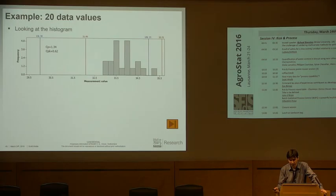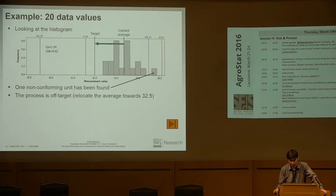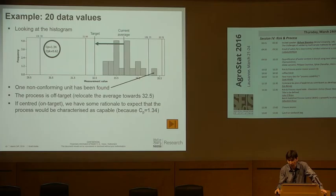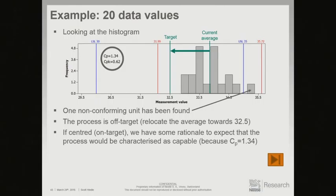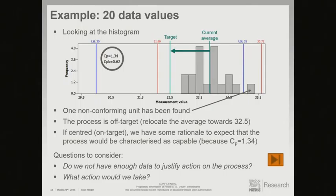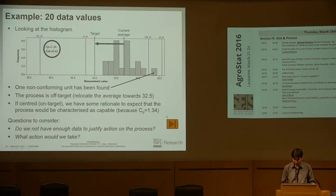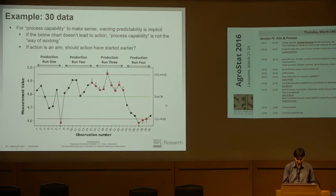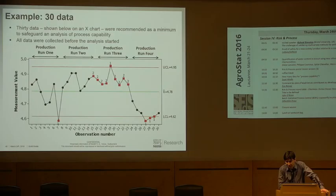Example two. We have four days, five values per day. The various specifications are shown on the picture, so the uncertainty is pretty high. Here we have the comparable picture — consistent with a predictable process, if it makes sense in the context of the knowledge of the operation. Looking at the histogram: one non-conforming unit already identified. Clearly, we are off target. The CP of 1.34 tells us that if we operate in the middle, we have expected capability around 1.3, which for many people would be satisfactory. So, do we not have enough data to justify action? What action would you take? I would try to lower the average.